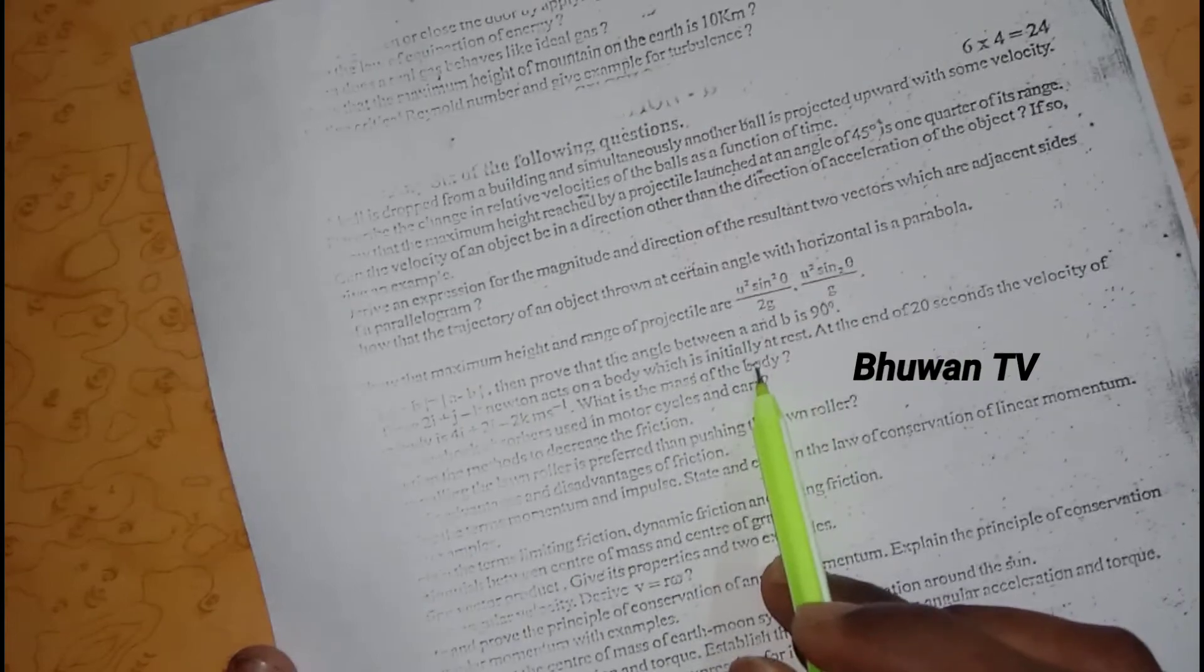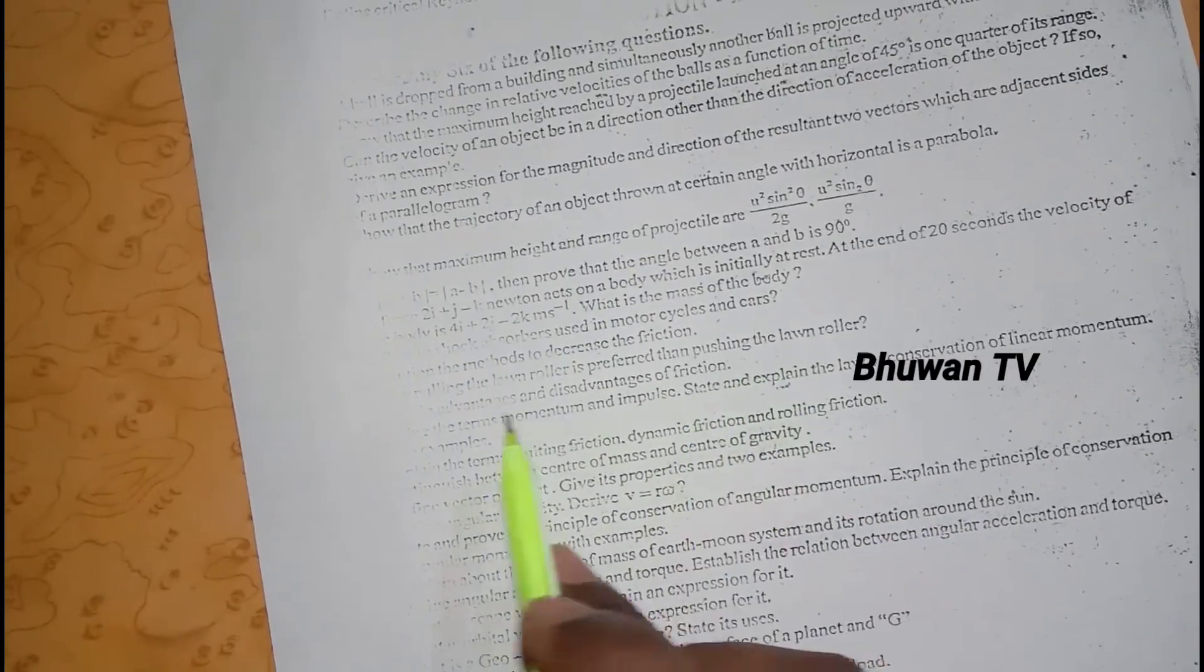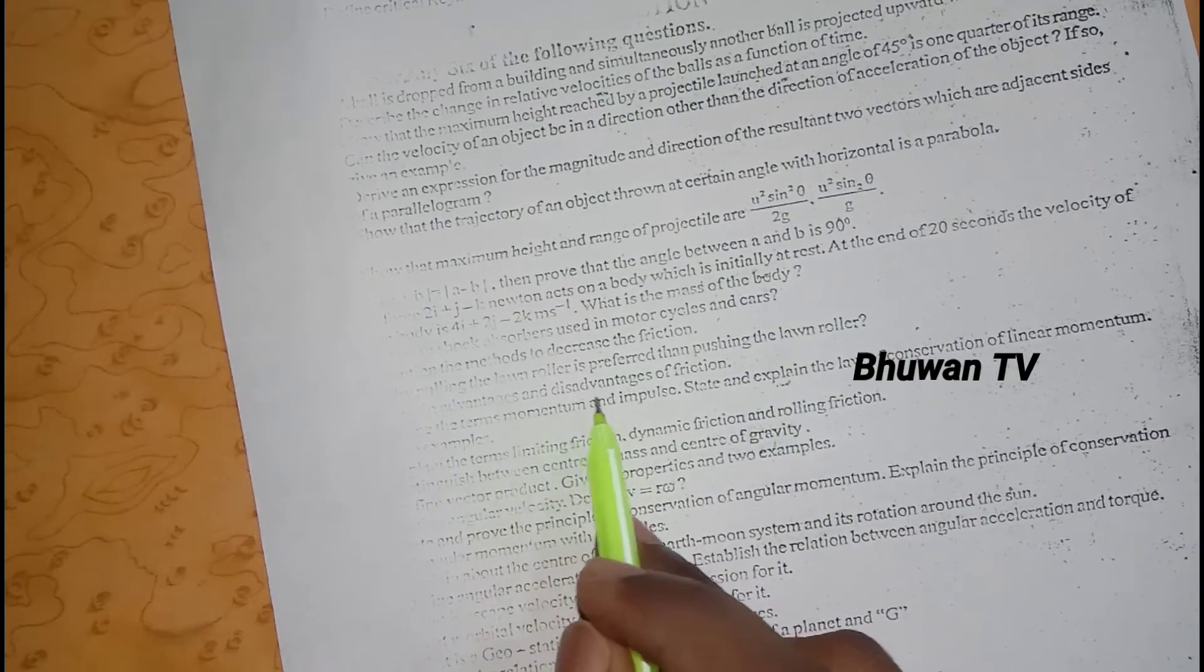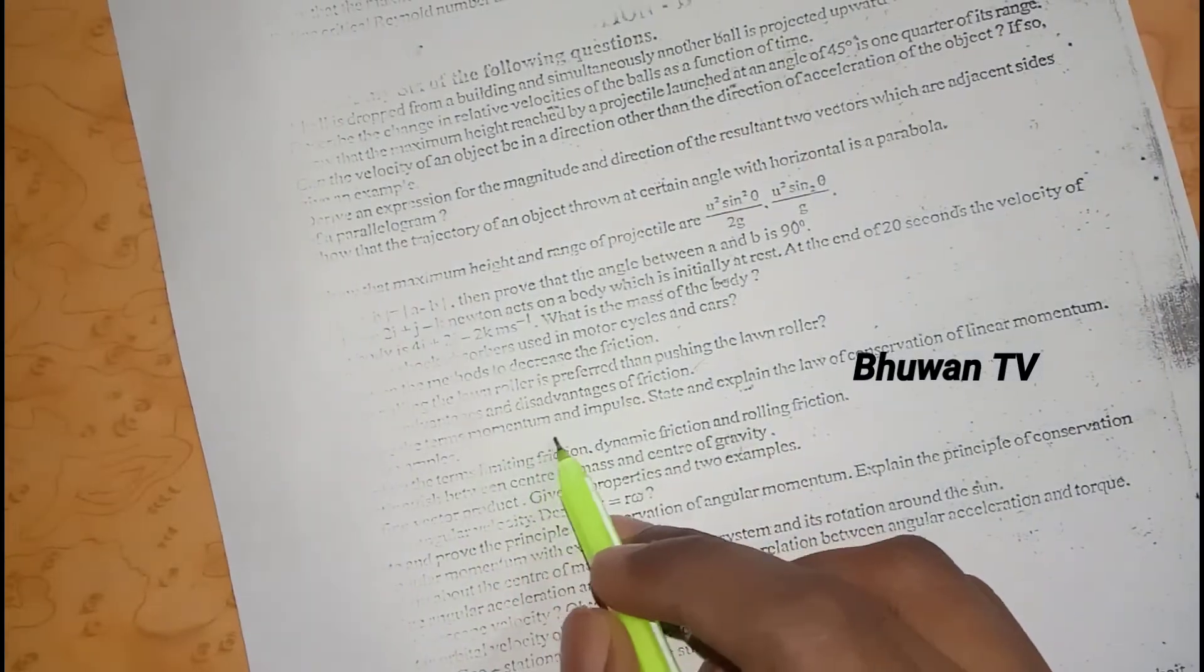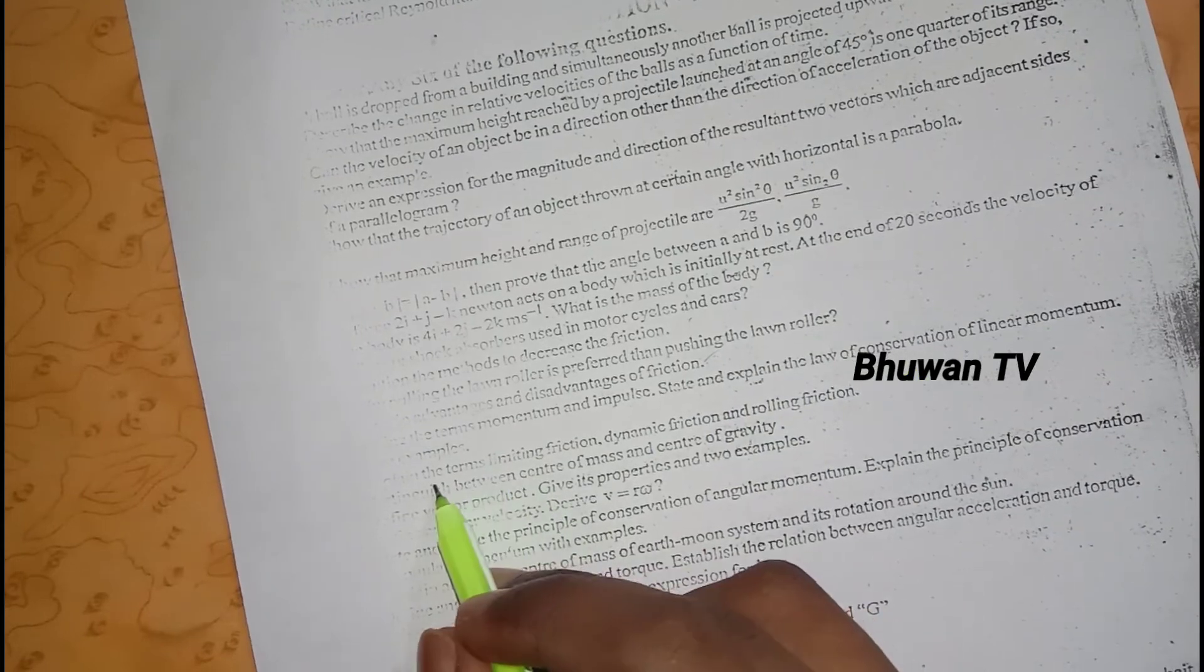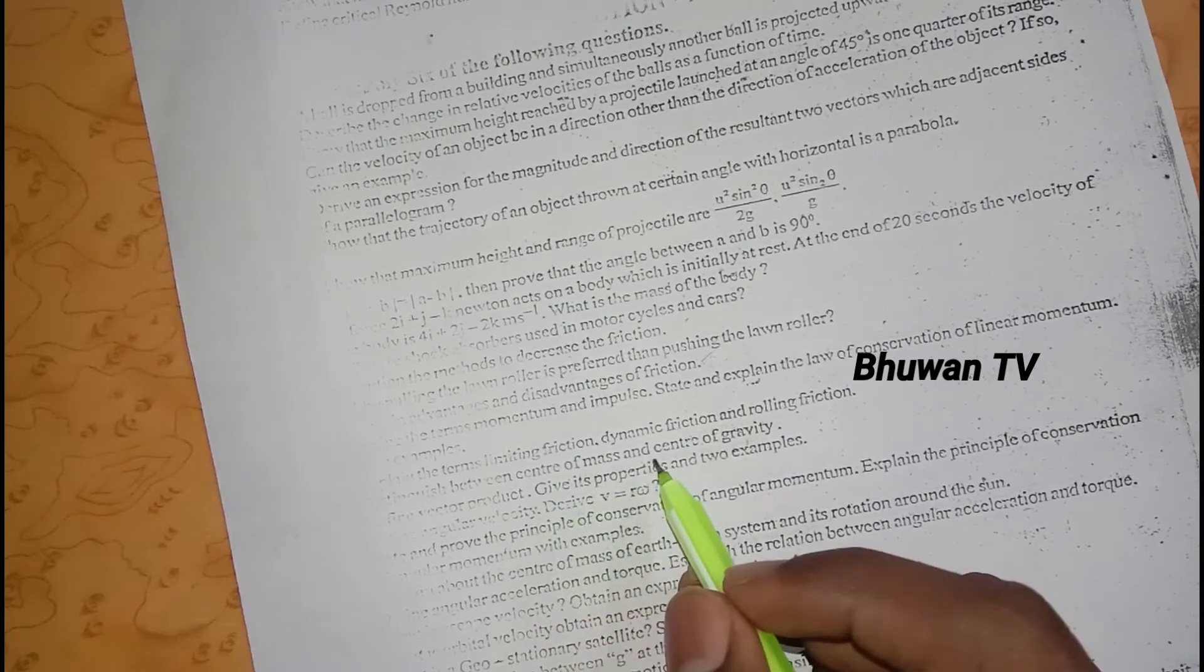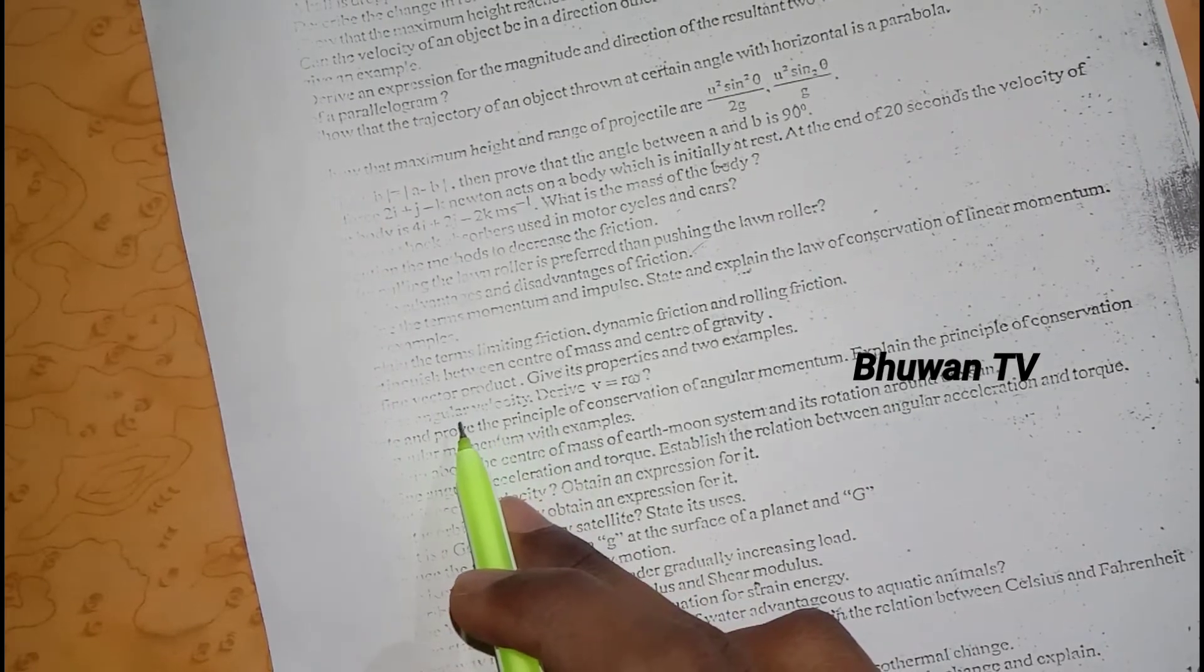Why is pulling of lawn roller preferred than pushing the lawn roller? Advantages and disadvantages of friction is important, very important. Define terms momentum and impulse. State and explain the law of conservation of linear momentum with examples. Explain the terms limiting friction, dynamic friction, and rolling friction. Distinguish between center of mass and center of gravity.